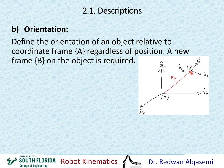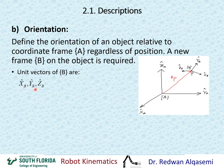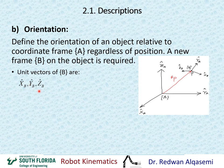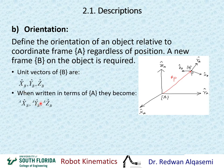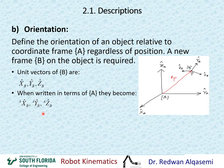Now we're going to talk about the orientation of P relative to frame A. The unit vectors of frame B are XB, YB, and ZB. Each one of these vectors has three components, just like vector P has three components. We represent these vectors as XB, YB, and ZB relative to frame A — we put the A on the left side upwards as the reference frame. So this is XB relative to A, YB relative to A, and ZB relative to A. Each one of these vectors has three components.